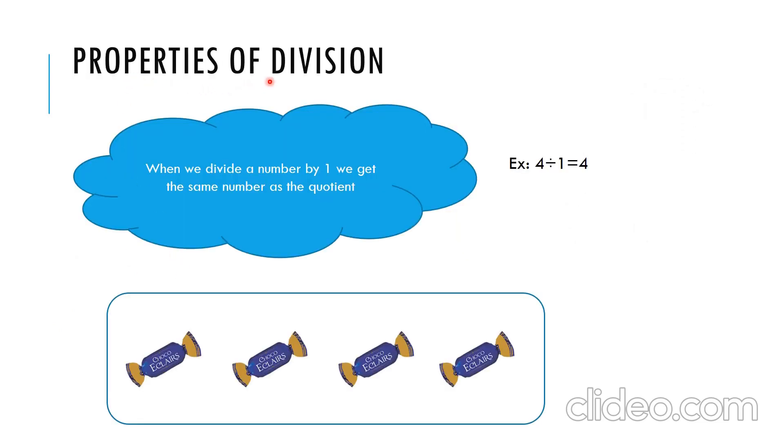Properties of division. When we divide a number by 1, we get the same number as the quotient. See for example here, 4 toffees are there. We are dividing that into one group. So in one group, there are 4 toffees. That means 4 divided by 1 equal to 4.